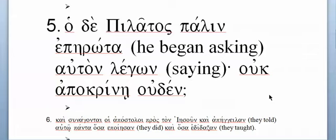Mounce BBG, Chapter 18, Sentence 5. This starts off with a post-positive δέ. So you're going to run with 'but' or 'and' — most of the time, if you don't have any more context than that and it's probably from a narrative, it's probably best to translate it as 'and.'